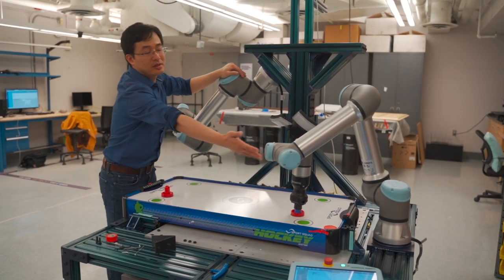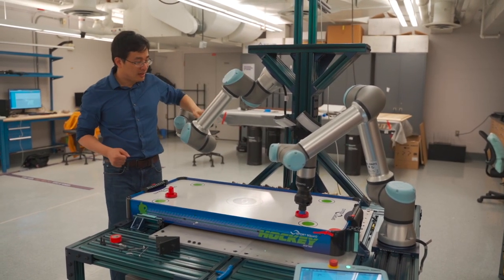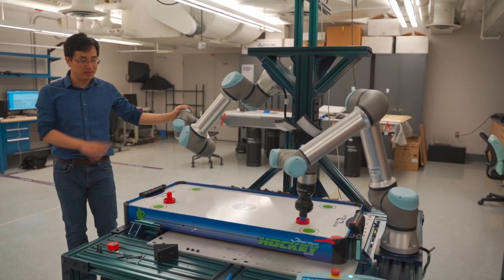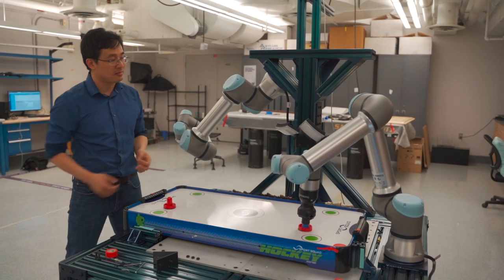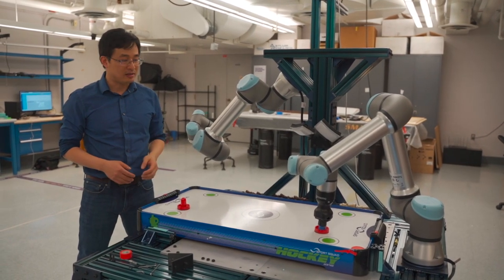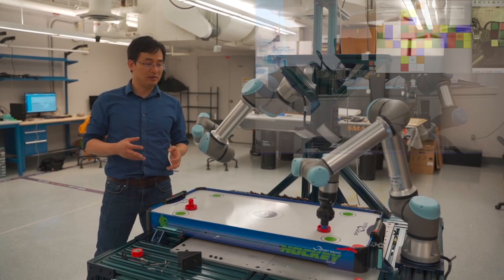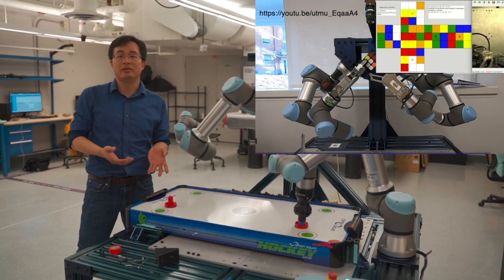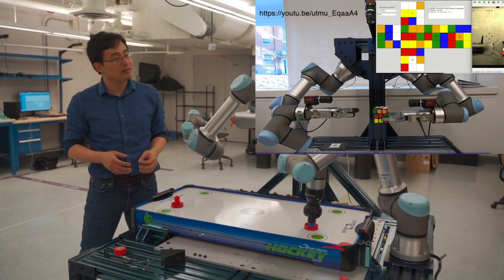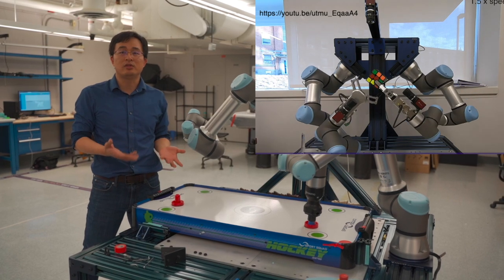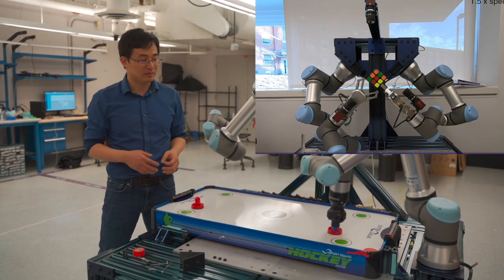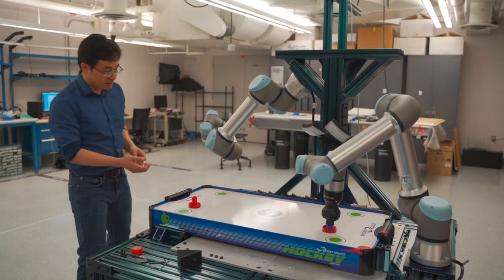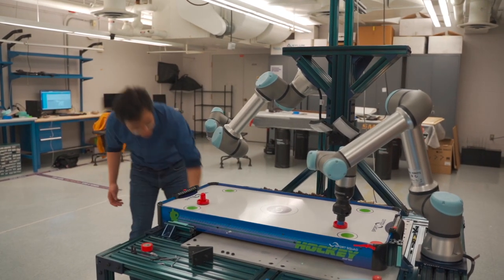You see here we're just using one robot arm, but this is a much more sophisticated setup. We actually use the entire system for many different things. Previously we used the robot to solve Rubik's cubes. We can actually make the entire system solve an arbitrary Rubik's cube within 20 steps.